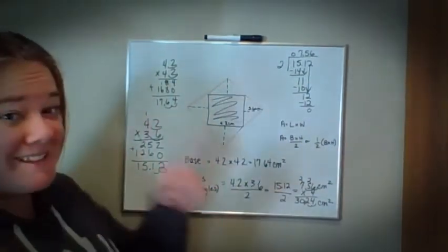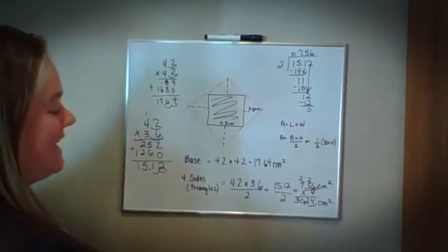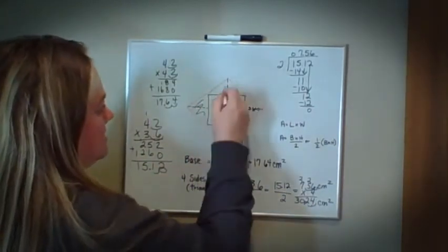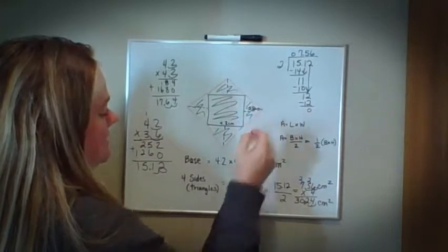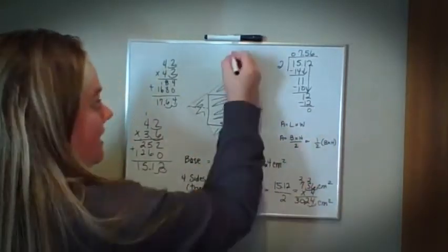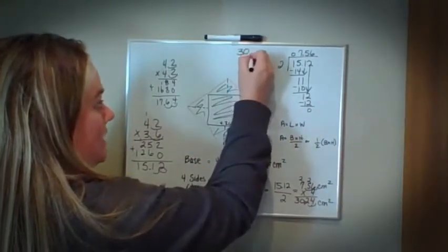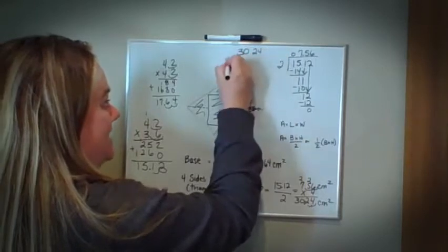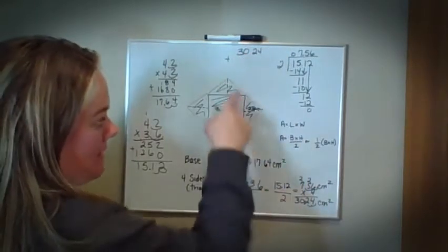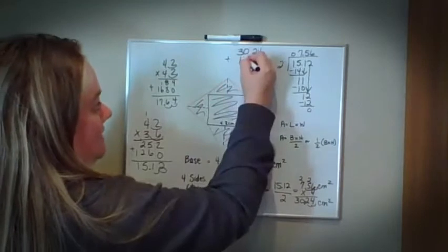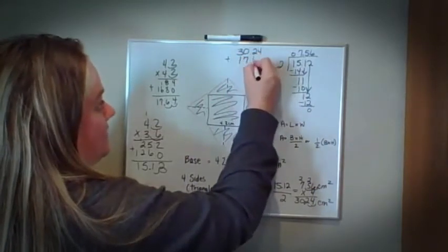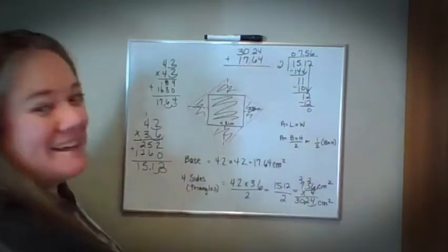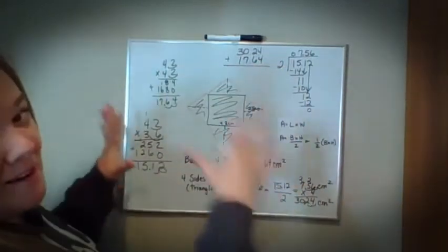But that's not my answer because now I have to take that 30.24 and add it to what I got for my base, which is 17.64. This is it, my last step. That's a lot of work.